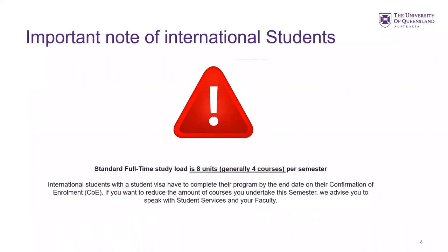An important note for international students: a standard full-time study load is eight units, which is generally four courses per semester. If you're an international student on a student visa, you have to complete your program by the end of your COE, or confirmation of enrolment. If you want to reduce the number of courses you undertake in a semester, we strongly recommend you talk to student services and also have a discussion with your faculty, as it will have impacts on your COE and your visa.